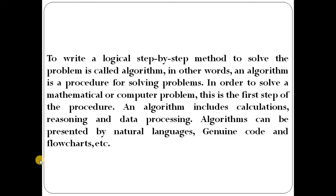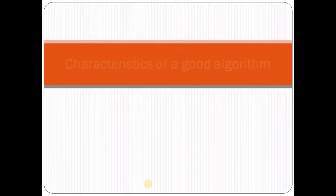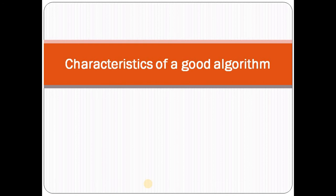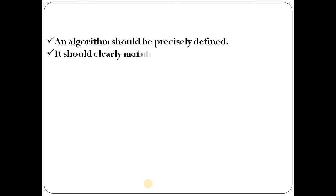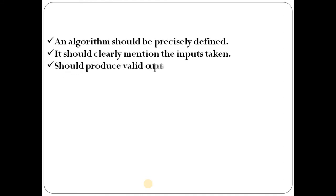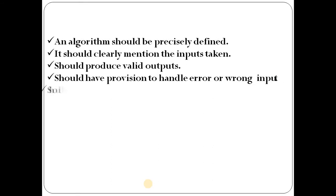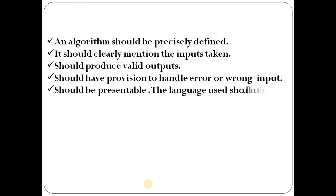That is the definition of an algorithm. Next, the characteristics of a good algorithm: First, an algorithm should be precisely defined. Second, it should clearly mention the input — meaning values taken from the user or from the keyboard. Third, it should produce valid outputs and have the ability to handle errors or wrong input. And last, it should be presentable. These are the characteristics of an algorithm.